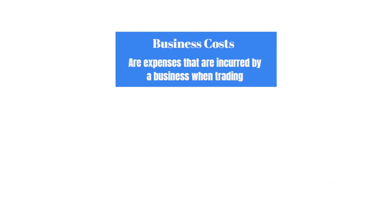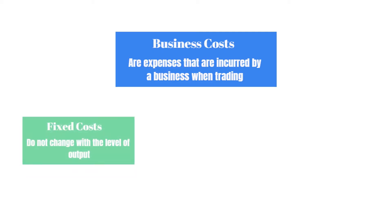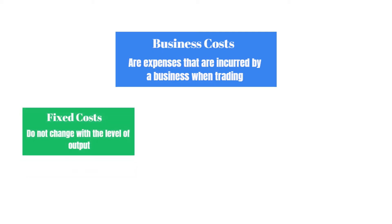We're going to narrow it down now and look at two types of business costs. First, fixed costs — an expense that does not change with output. Whether the business's output increases or decreases, the fixed costs remain the same. Fixed costs do change from time to time, such as salaries or business rates increasing, but not because of output — not because of the business producing more.